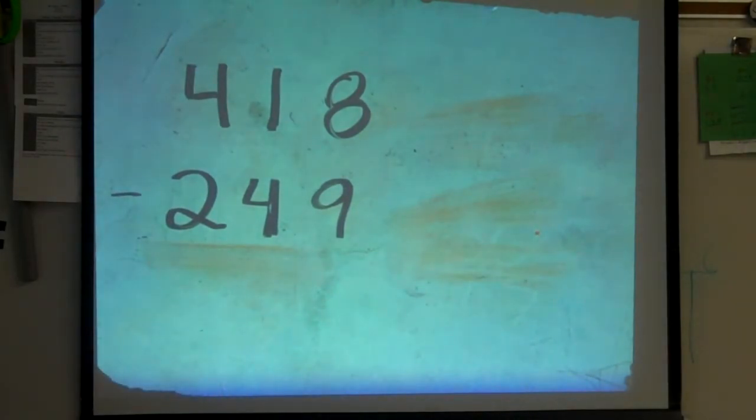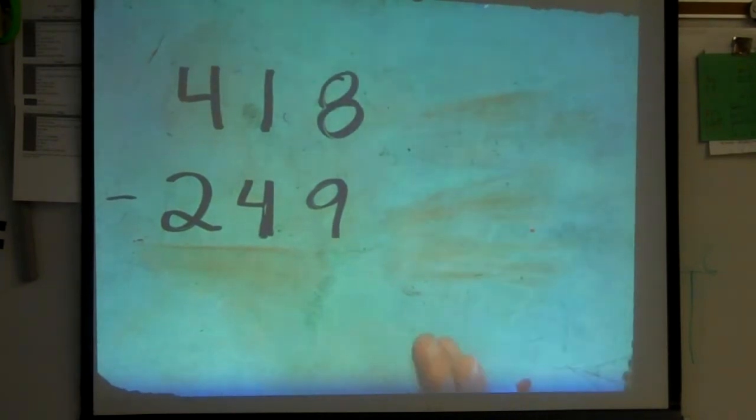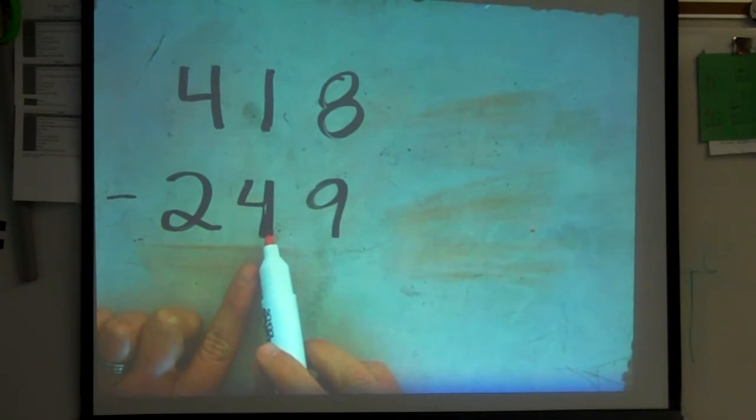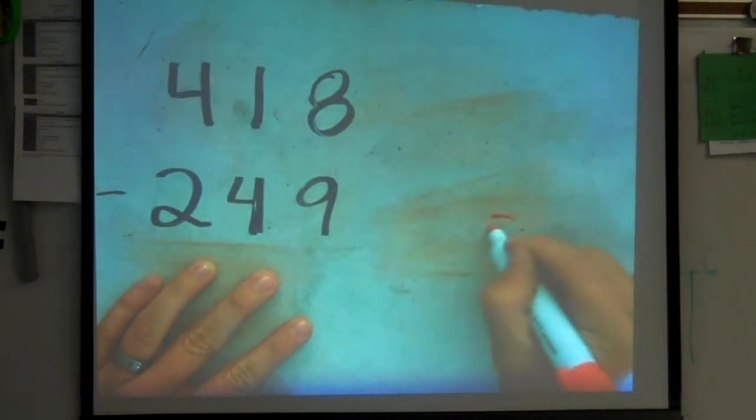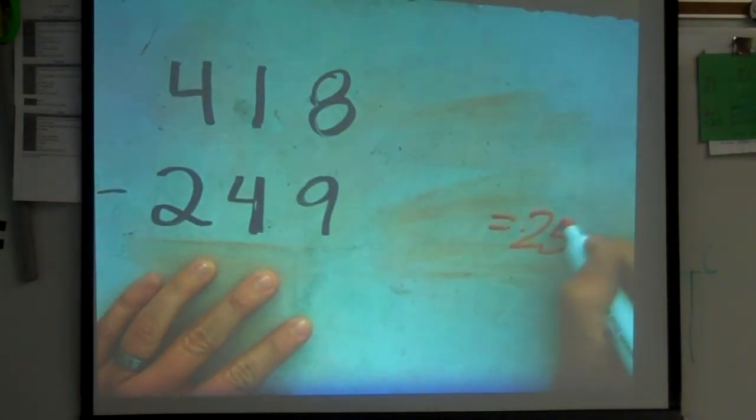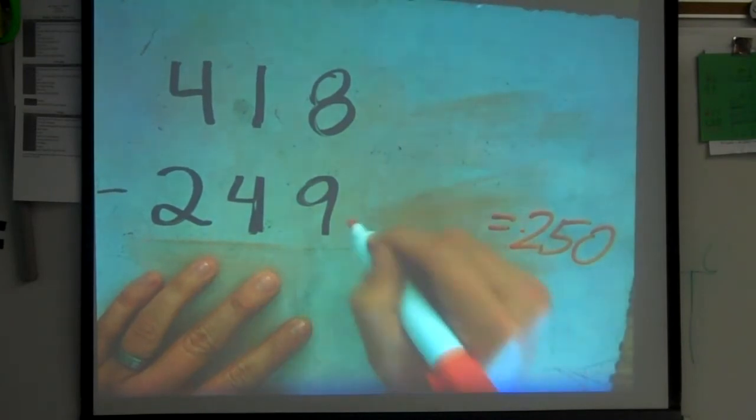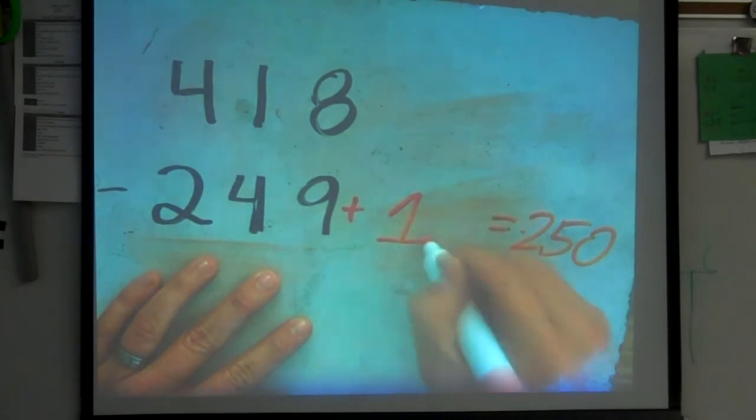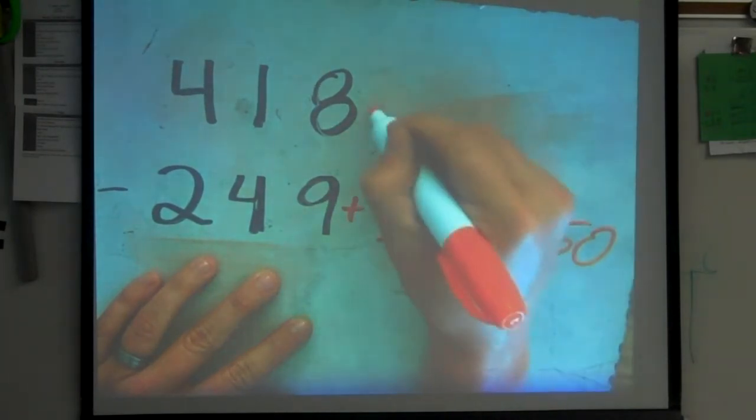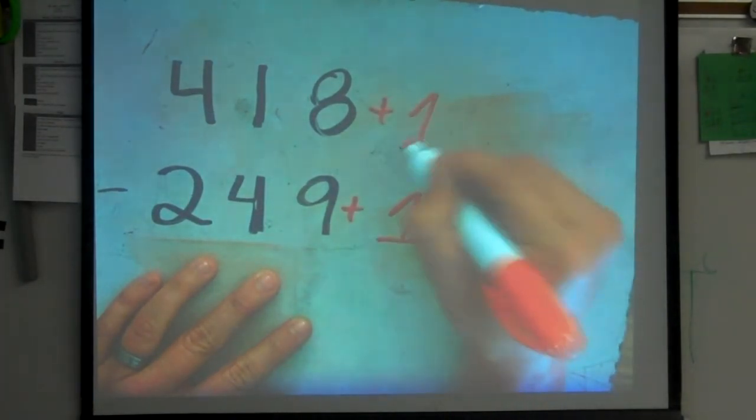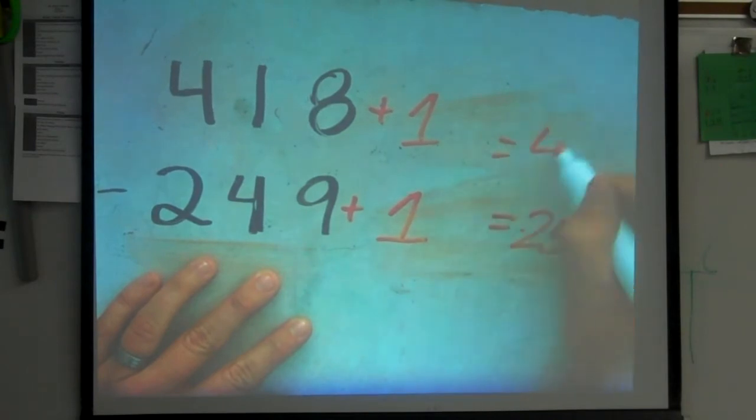Now, obviously, the first step I need to do is the same thing. I need to find that next friendly 10. So, the next 10 up from 249 is 250. I asked the guys, what did you do to get 250? They tell me they had to add. And they only had to add 1. So, I do the same thing to the top. I just add 1.